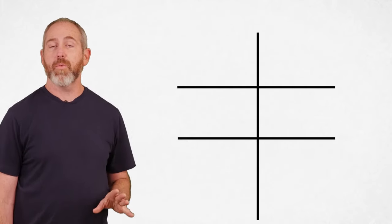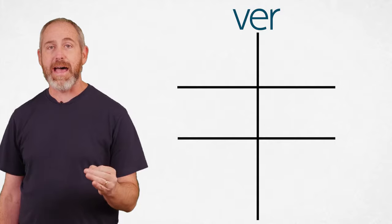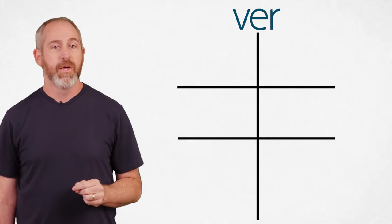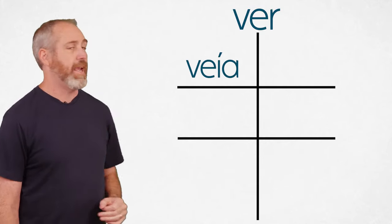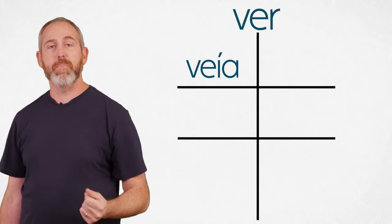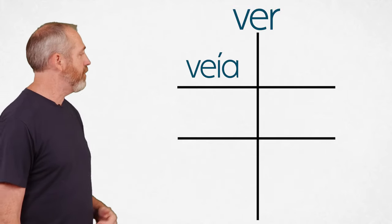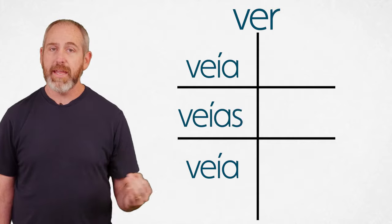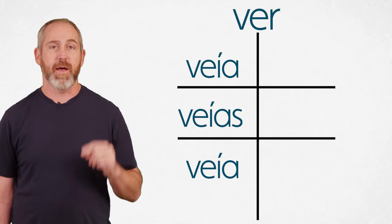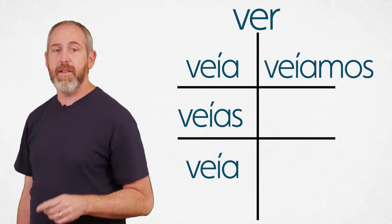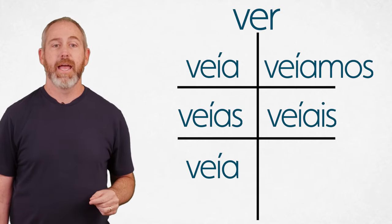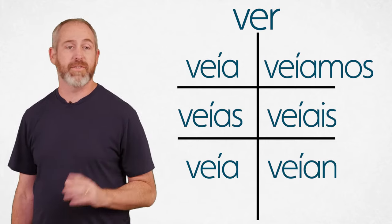And now let's look at one more irregular, and that is the verb ver, which means to see. Now all of these are going to start with V-E-I with an accent on that I. So veía, I used to see, or I saw in the past, or I was seeing. Yo veía. And also on the bottom left, veía. And in the middle, veías. And then up on the top right, veíamos. And then veíais. And veían. And that's all of them.